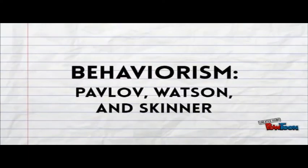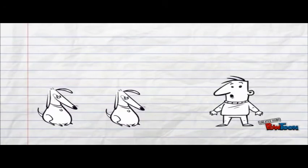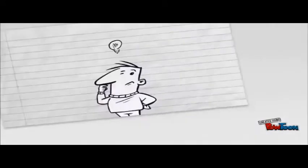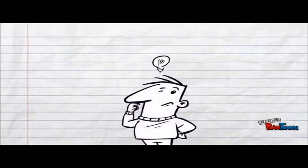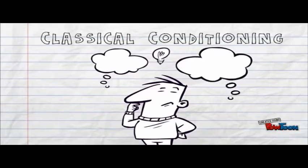Let's talk about behaviorism. We begin in late 19th century Russia where scientist Ivan Pavlov lived with his dogs. Whenever Pavlov would bring the dogs their food, they would salivate. One day he walked into the room without food and was shocked to see that the dogs were still drooling in anticipation. What Pavlov had accidentally discovered was the concept of classical conditioning — he wondered if he could make the dogs think they were getting food, and thus make them drool whenever he wanted.